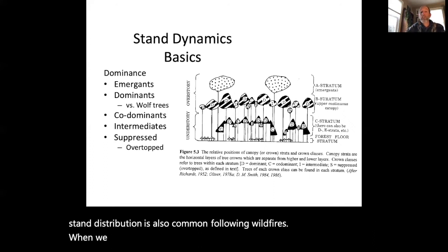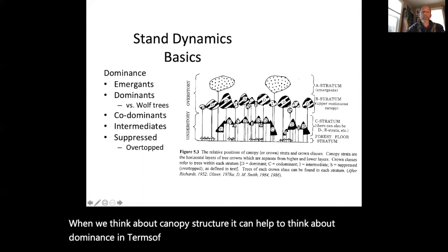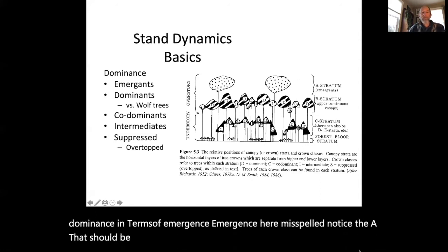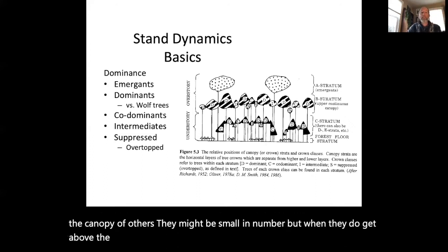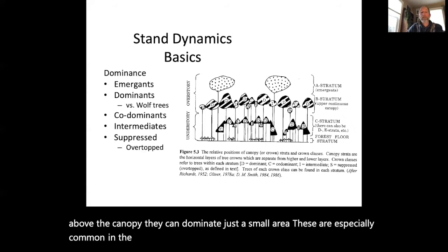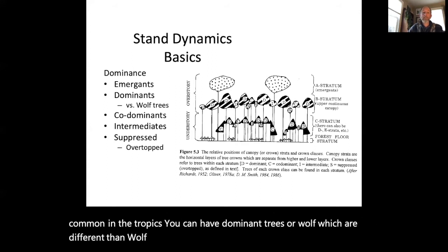When we think about canopy structure, it can help to think about dominance in terms of emergence. We have emergent trees — trees that emerge above the canopy of others. They might be small in number, but when they get above the canopy they can dominate just a small area. These are especially common in the tropics. You can have dominant trees, or wolf trees, which are different from dominant trees — wolf trees might be standing-alone dominant trees from a prior disturbance.